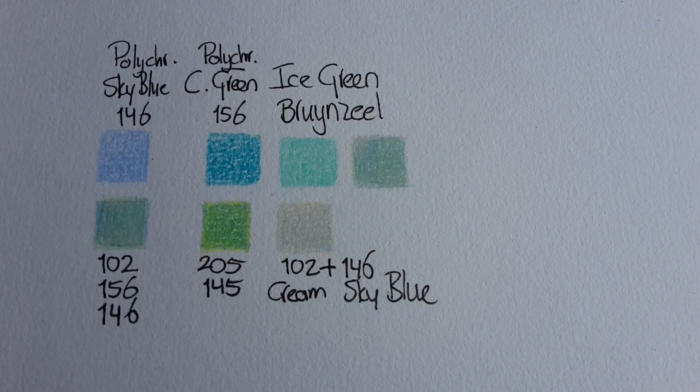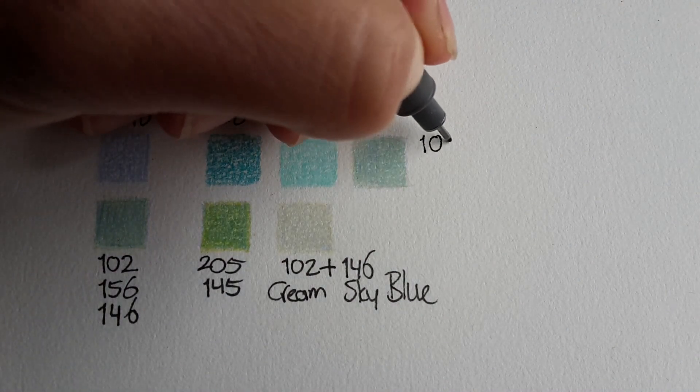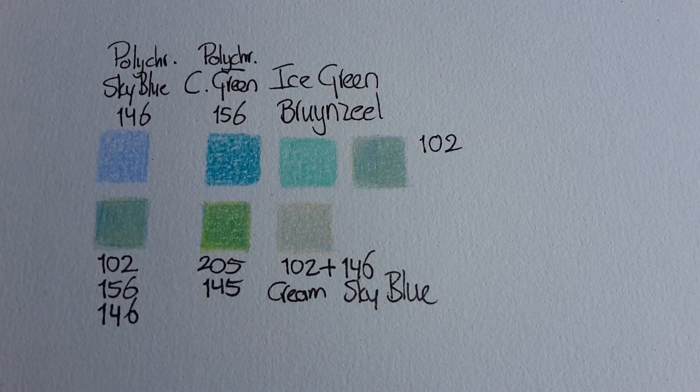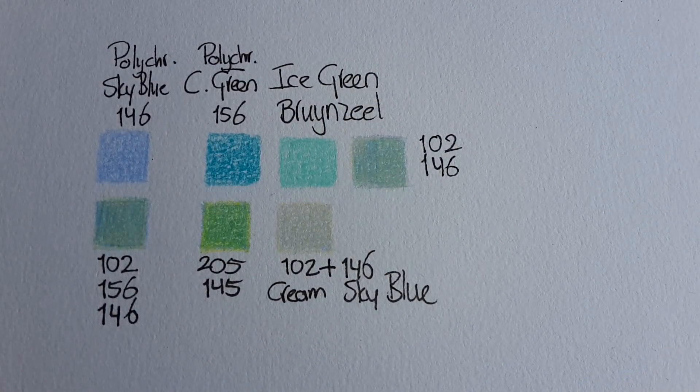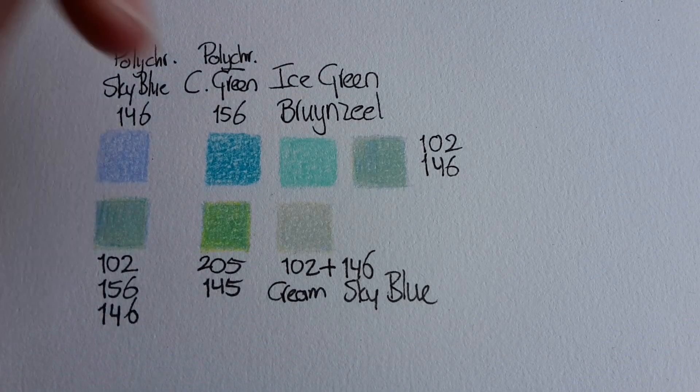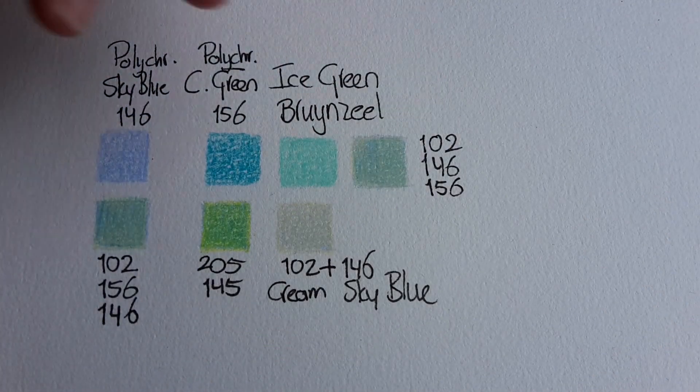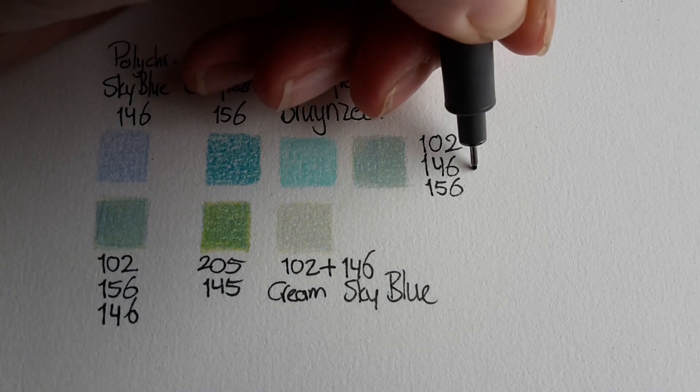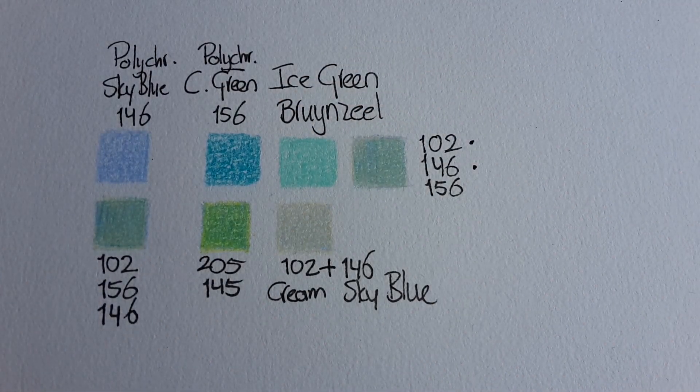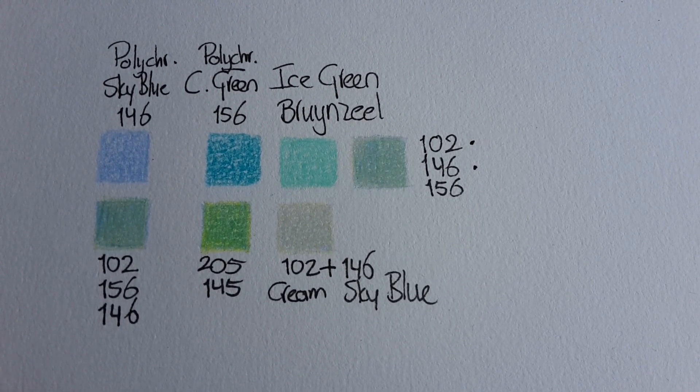So let me write down what I did. I started with 102 the cream, then I did 146, then 156, and then I added a little bit of yellow and a little bit of sky blue on top of the 156 cobalt green.